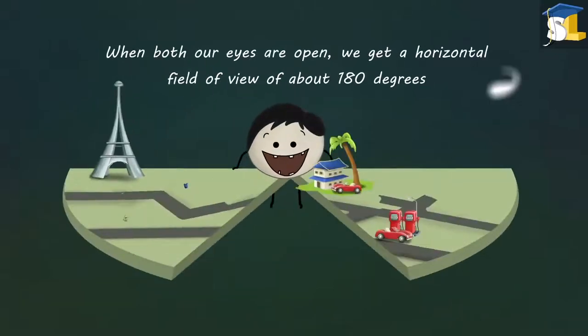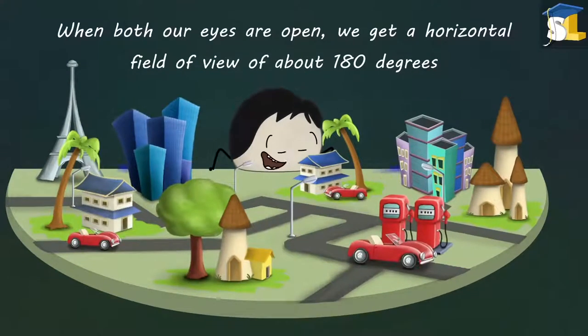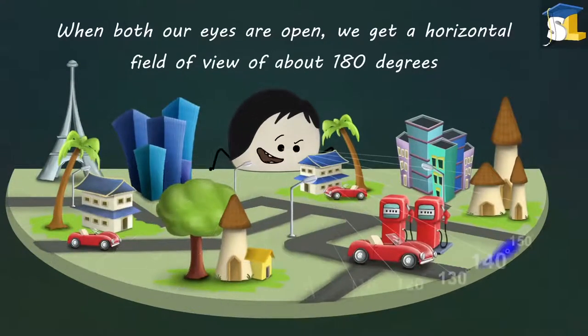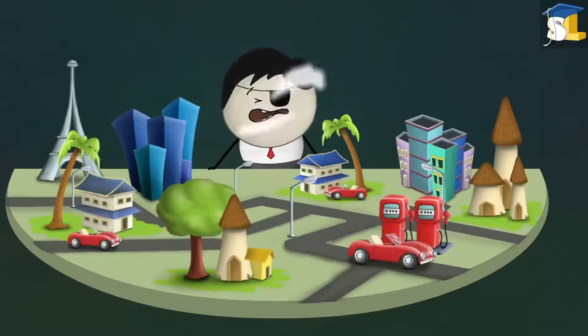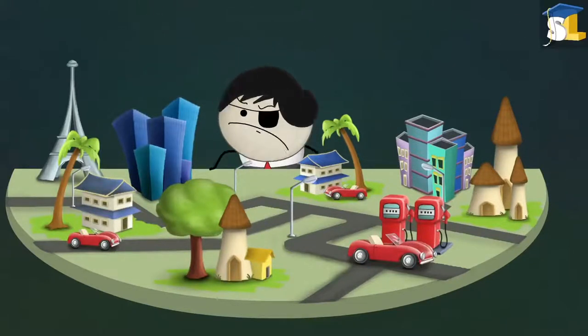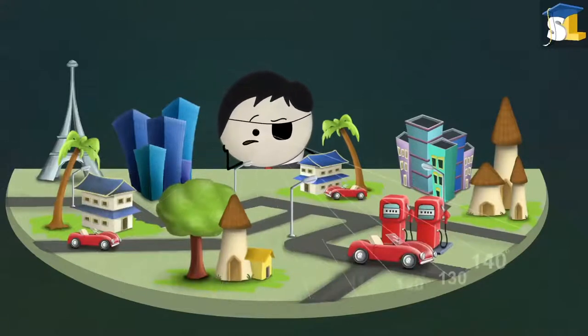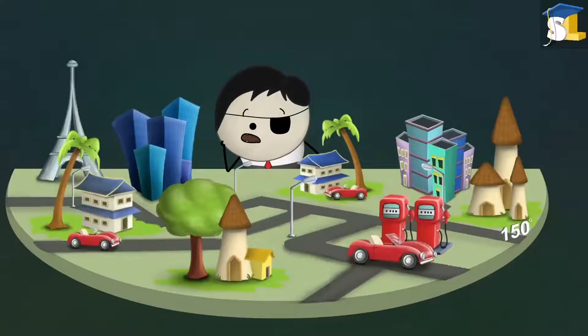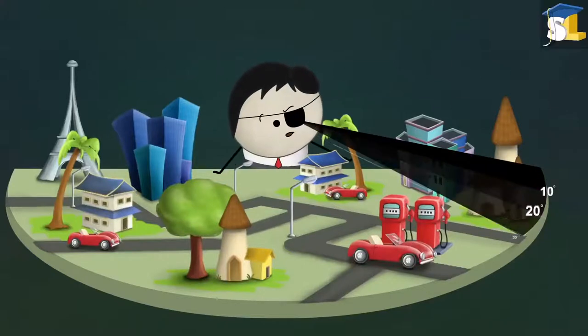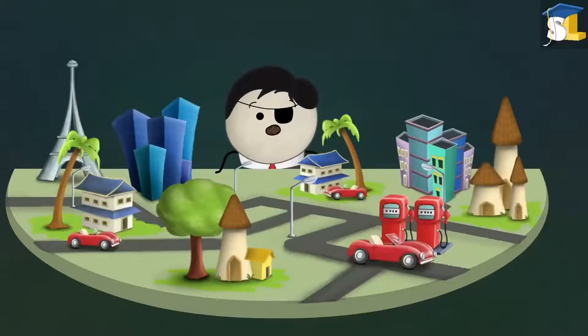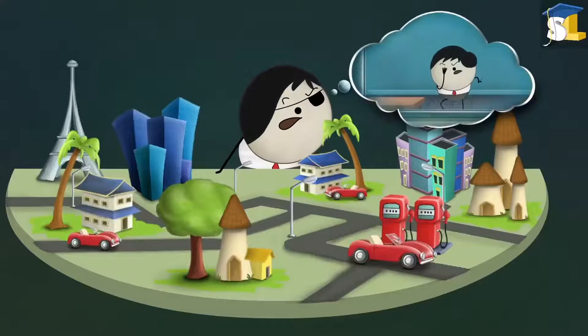When both our eyes are open, we get a horizontal field of view of about 180 degrees. However, with only one eye open, we get a horizontal field of view of only around 150 degrees. We are unable to view around 20-30 degrees. Hence, we are not able to see the table when our one eye was closed.